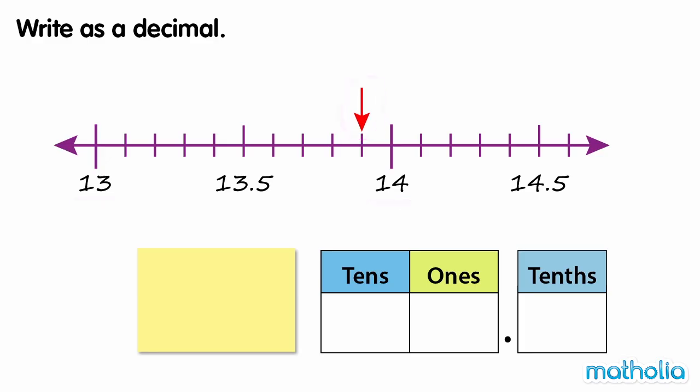Let's count on from 13.5: 13.5, six, seven, eight, nine. The red arrow is pointing to the decimal 13.9. 13.9 has one-ten, three-ones and nine-tenths.